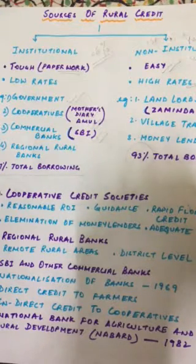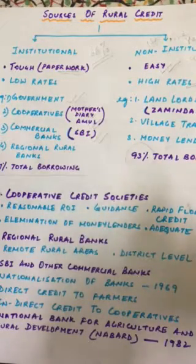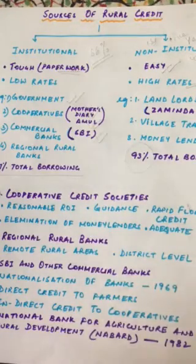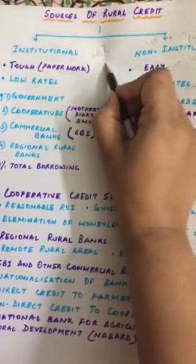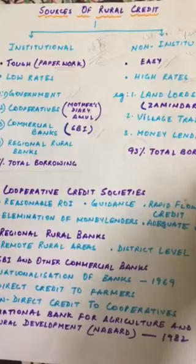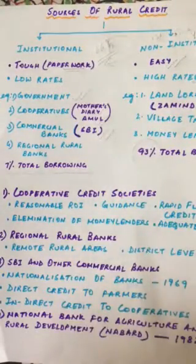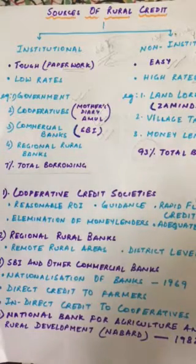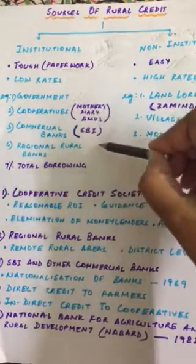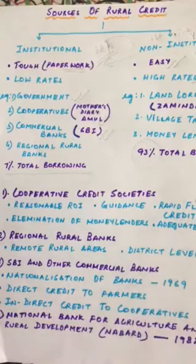After the first Five Year Plan, the focus shifted towards more institutional sources of credit. People came to know these credits are available at a much lower rate of interest and are more reliable, so they gradually shifted from non-institutional to institutional borrowings. We will focus more on institutional sources — cooperatives, regional rural banks, and commercial banks — in our next class. Om Namashivaya.